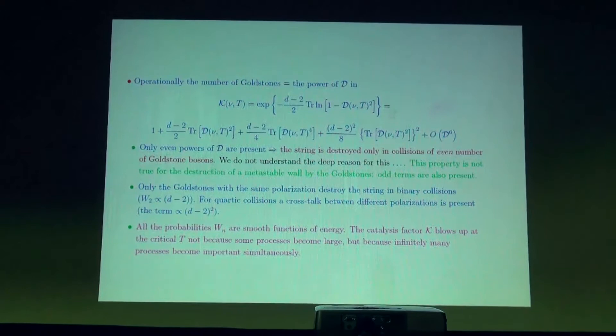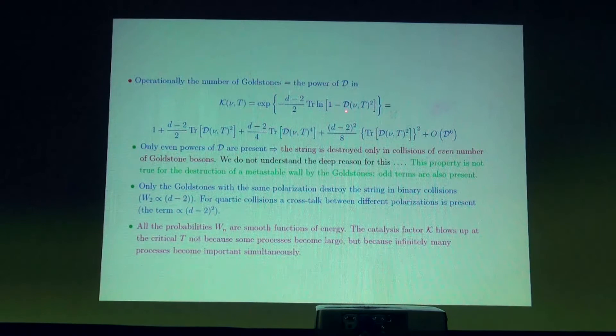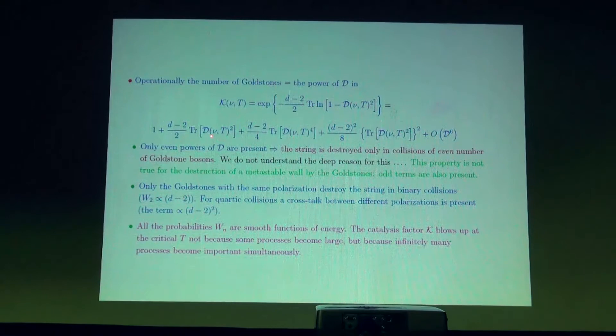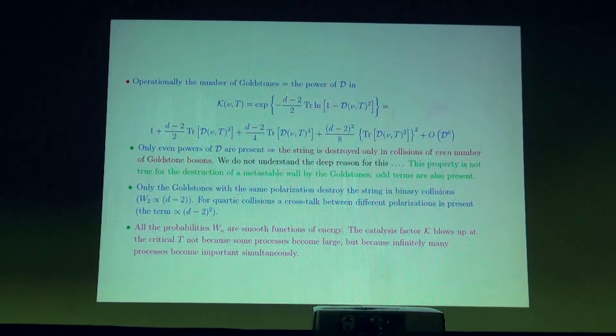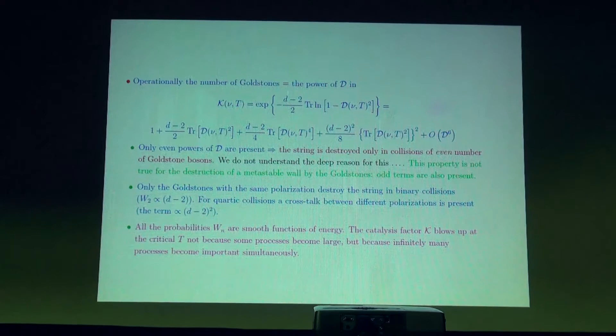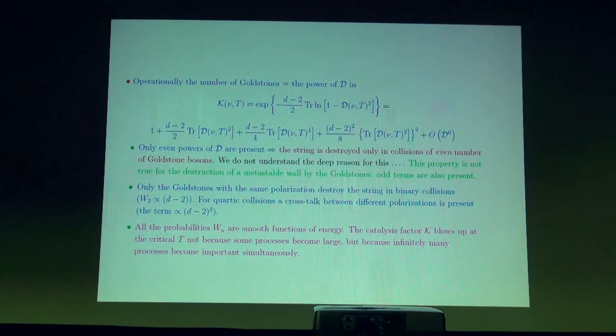The expression for the catalysis factor in terms of this modified matrix, when expanded in powers of the matrix, has each power corresponding to one power of the density of Goldstone bosons. The first term corresponds to two Goldstone bosons, the next to four, and so on. What is interesting is that only even powers of this density matrix enter the expansion. Therefore, the string is destroyed only in collisions of an even number of Goldstone bosons. In collisions of three or five, it is not destroyed. There is no apparent symmetry which forbids breakup in odd-number collisions.